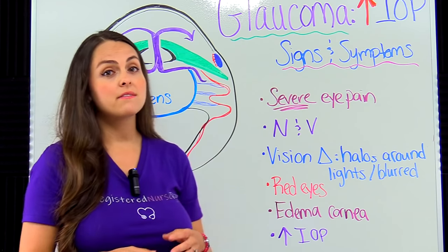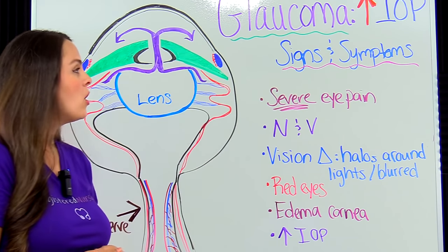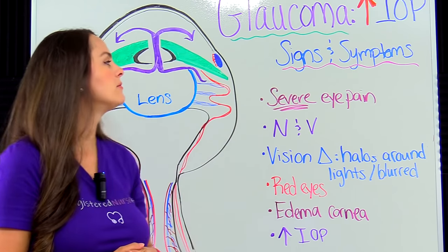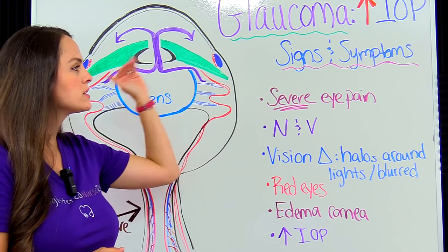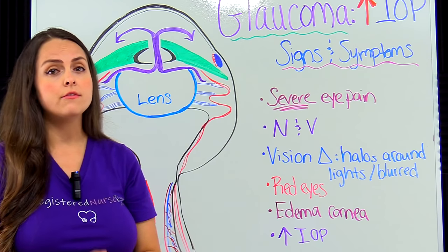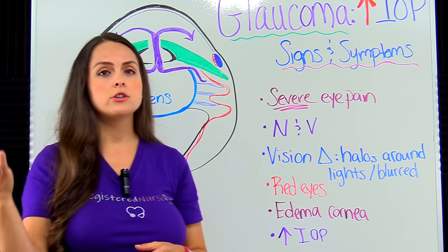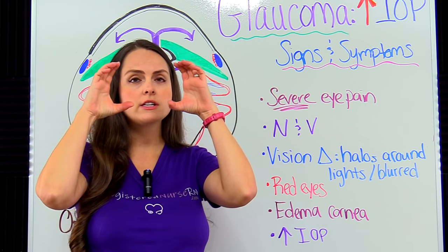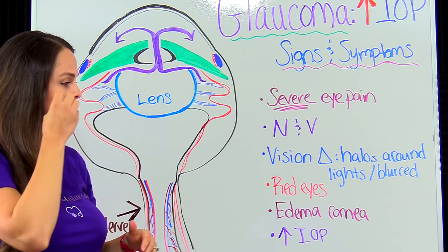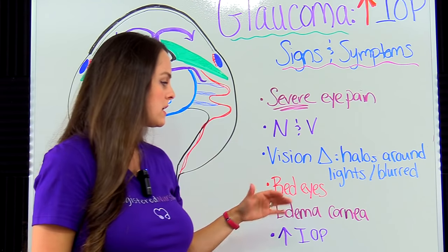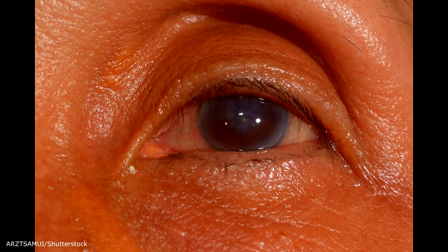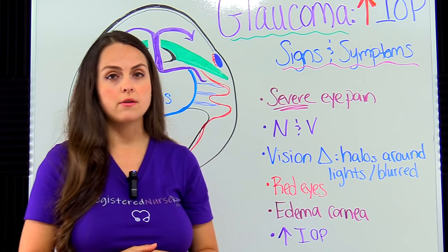What are the signs and symptoms of angle closure glaucoma? The patient is definitely going to notice them — they are not silent like with open angle. They can report severe eye pain, nausea and vomiting, blurred vision from all that increased pressure, and halos around lights. Their eyes can be red, and the pressure can be so high it causes edema on the cornea. Of course, they are going to have very high IOP.